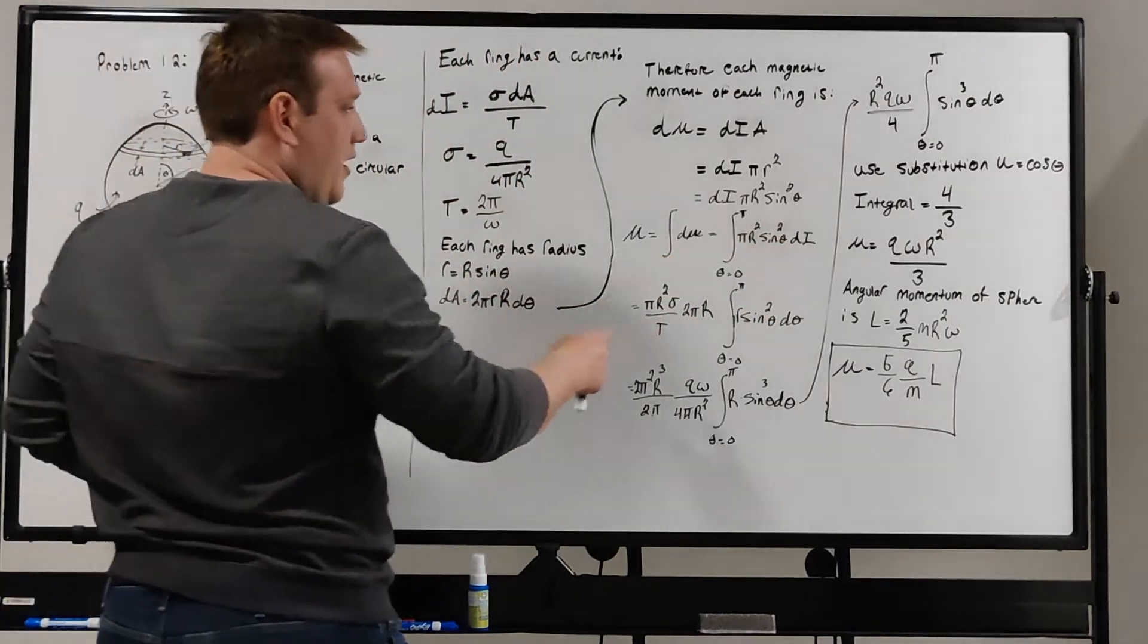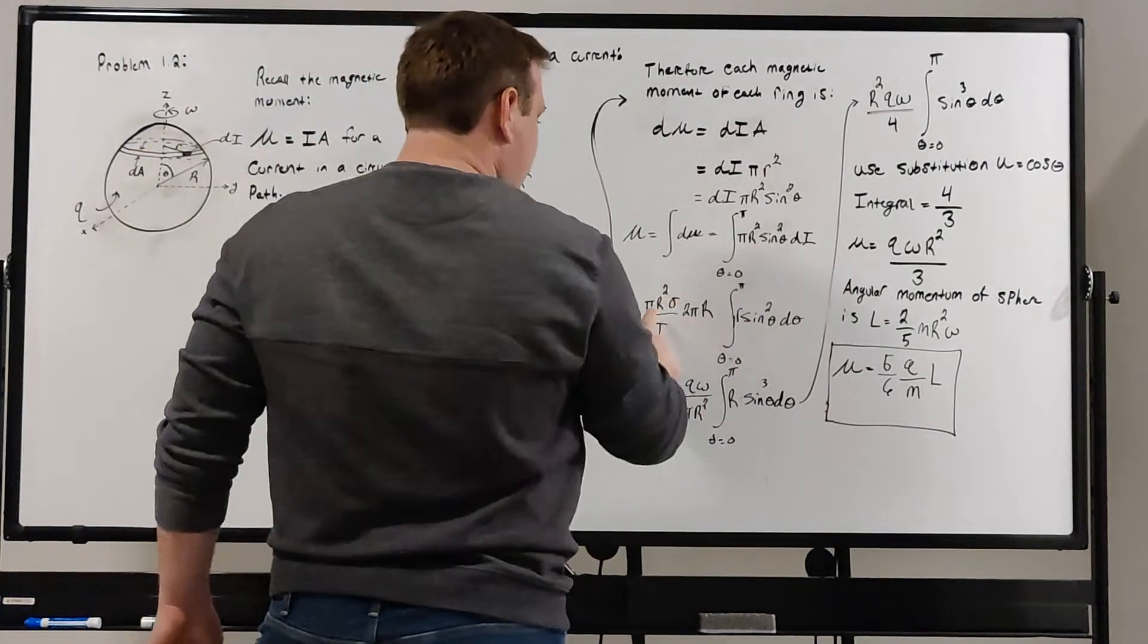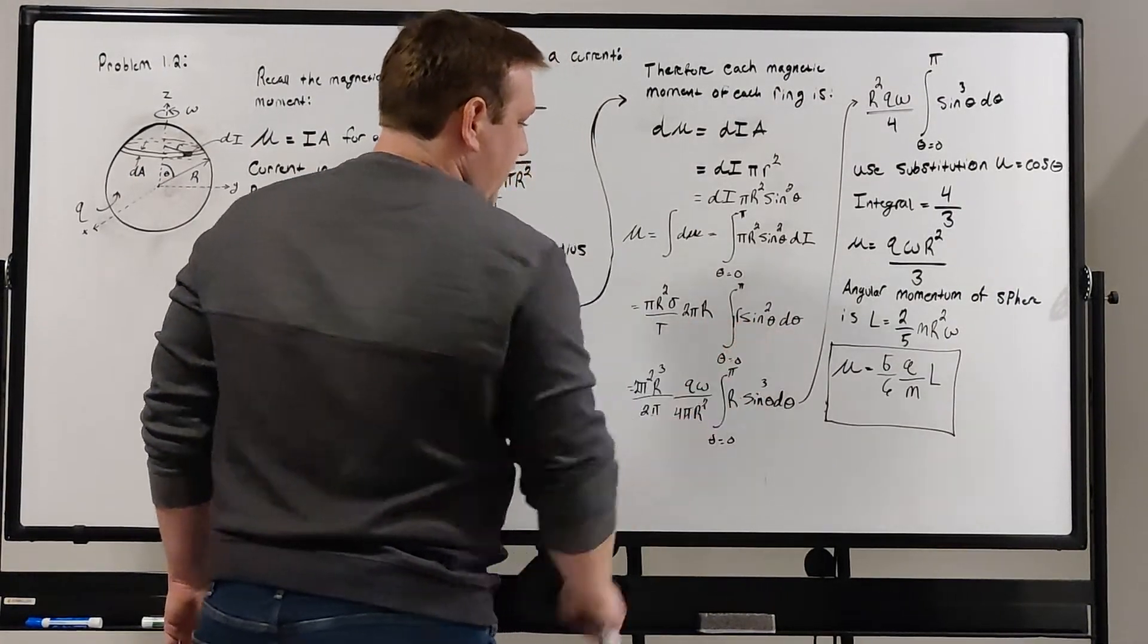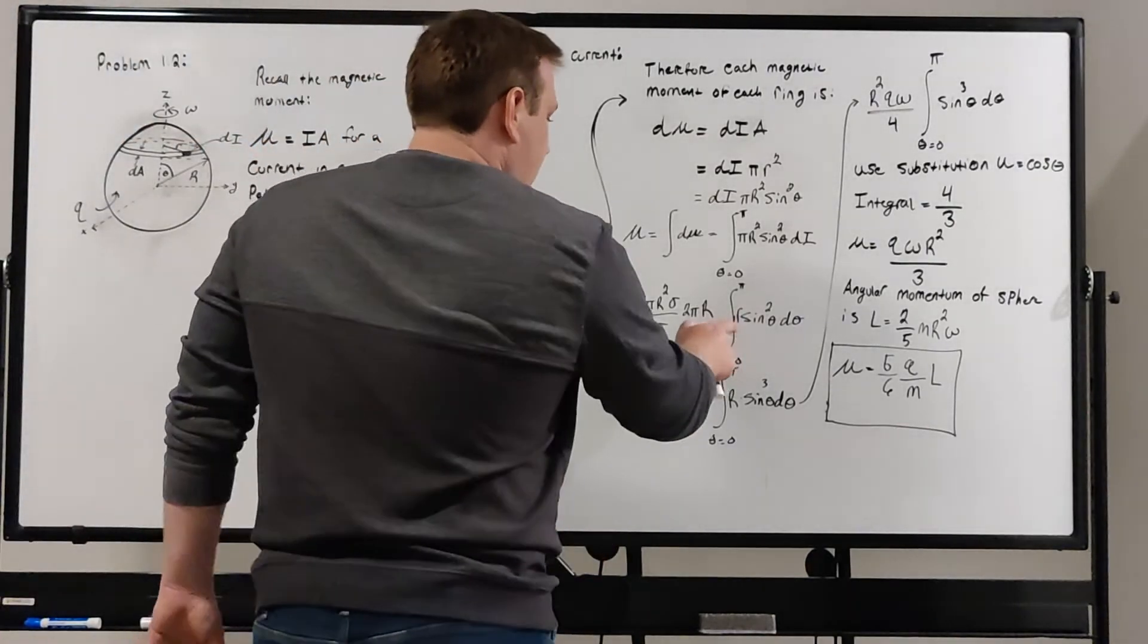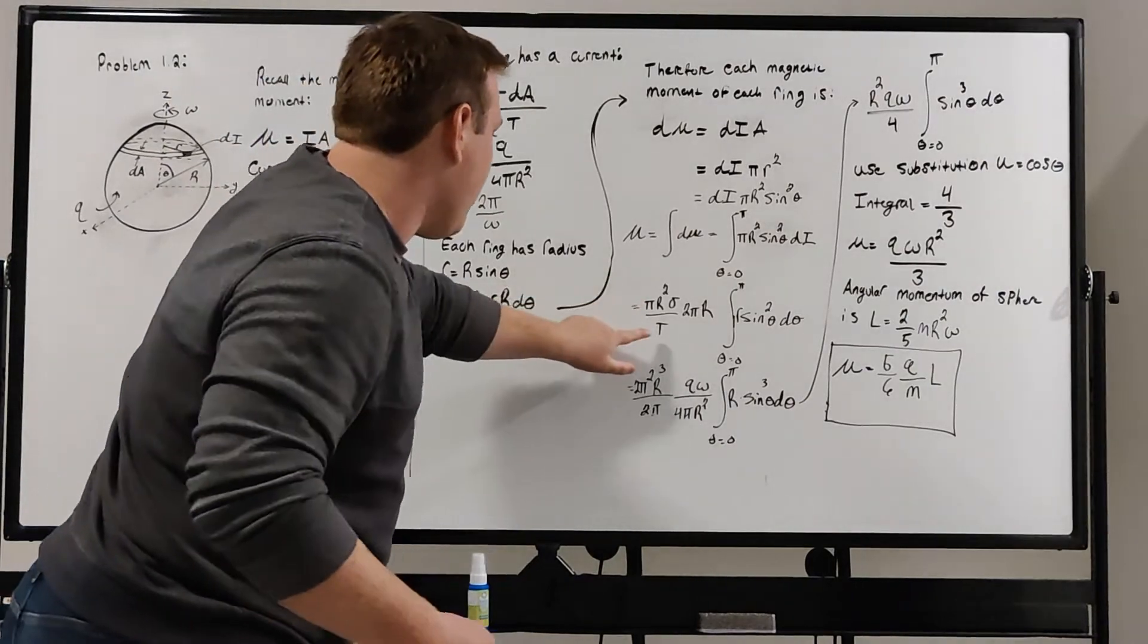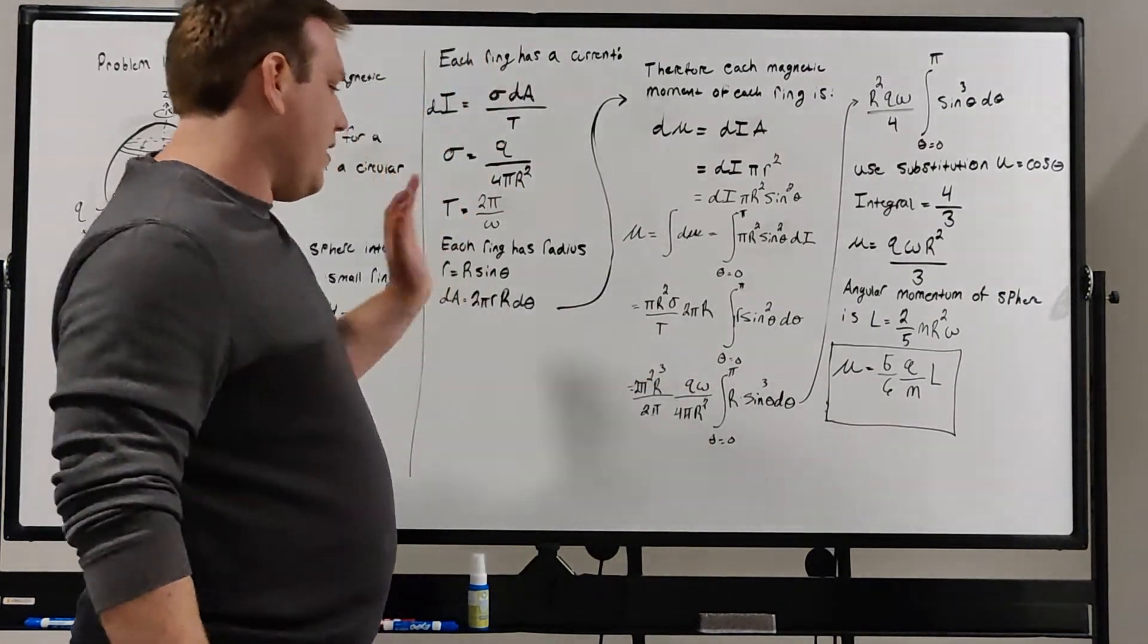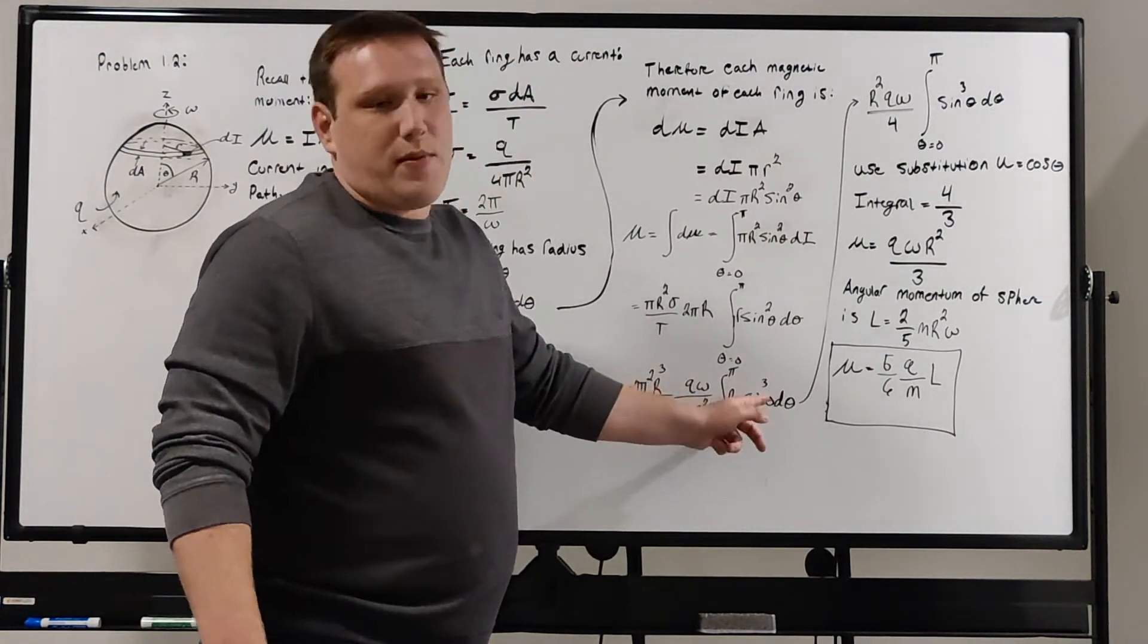Pulling out constants, I'm plugging in for dI here. dI is the infinitesimal current of each ring, which we found in the previous section. Plugging in, we have the pi r squared, we have the sigma over t, we have the 2 pi r from dA here. Then with the capital R, I have the little r sine squared of theta d theta. I left little r inside the integral because it depends on theta, which is our variable of integration here. Plugging in that little r, and also replacing sigma with the charge and the surface area, and replacing the period t in terms of the angular velocity omega. We basically get this jambulation of constants here, integrated with respect to theta, with the same bounds.